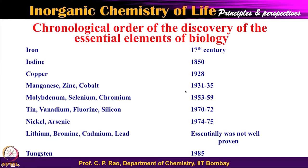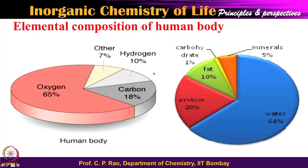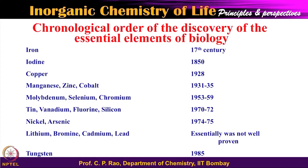If you look at the history of the essential elements, as early as the 17th century people knew that iron is essential. In the mid-19th century — around 1850 — people knew that iodine is also important. In the early 1900s people knew that copper is essential, and then in the 1930s people started understanding that manganese, zinc, and cobalt are essential. So many ions have been added one to the other. Molybdenum came in the 1950s–60s, along with selenium and chromium.